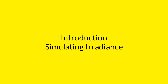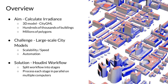Various tools exist for performing irradiance simulations of 3D models. However, these tools are typically used with relatively small models — for example, a 3D model may include 10 or 20 buildings. In order to support city planning, simulations of large-scale city models are often required. When running such large-scale simulations, various issues arise related to the scalability of the processes and tools. The aim of this research is to provide an automated irradiance mapping workflow for the simulation of large-scale city models.